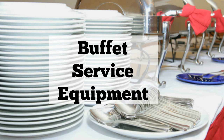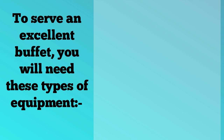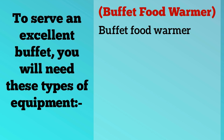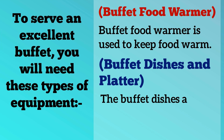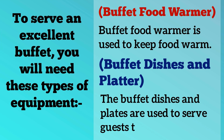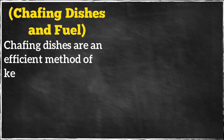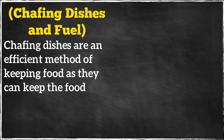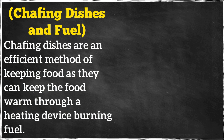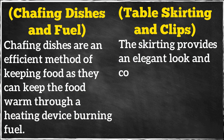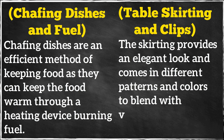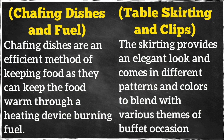Buffet service equipment: to serve an excellent buffet you will need the following types of equipment. A buffet food warmer is used to keep food warm. Buffet dishes and platters are used to serve guests their food. Chafing dishes and fuel — chafing dishes are an efficient method of keeping food warm through a heating device burning fuel. Table skirting and clips provide an elegant look and come in different patterns and colors to blend with various themes of buffet occasions.